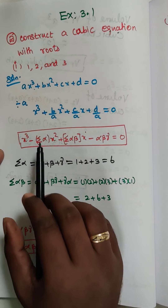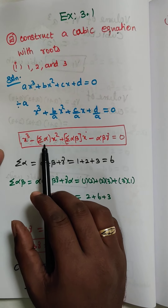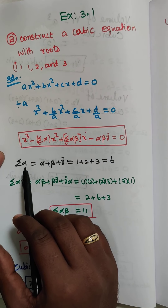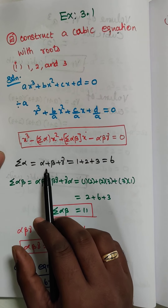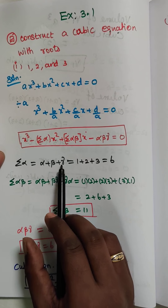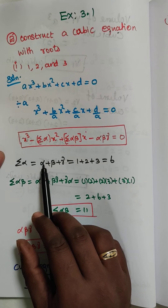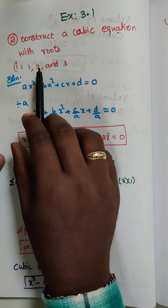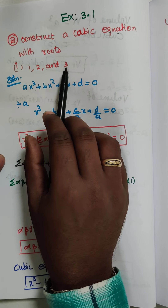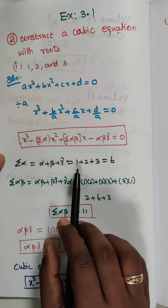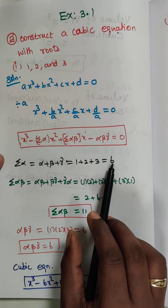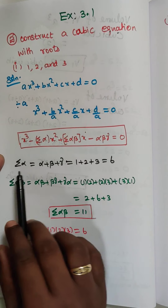Now I am going to find out the summation alpha. We know that Σα = α + β + γ. Substituting α = 1, β = 2, γ = 3: 1 + 2 + 3 = 6. So summation alpha equals 6.